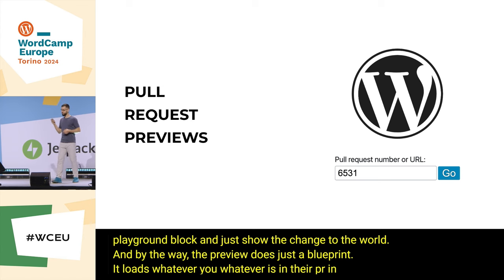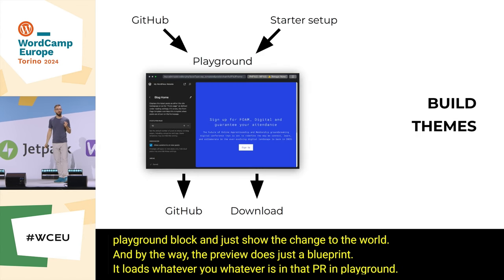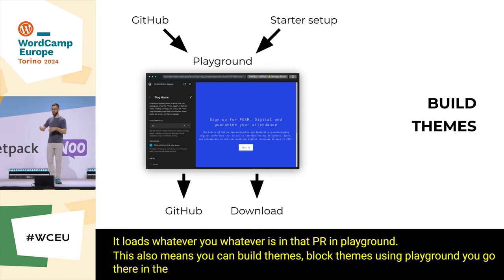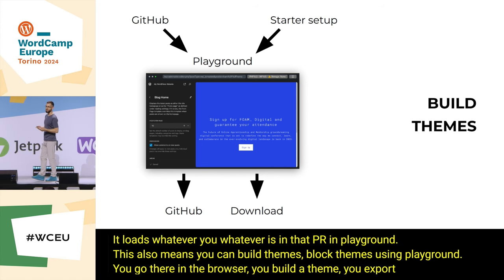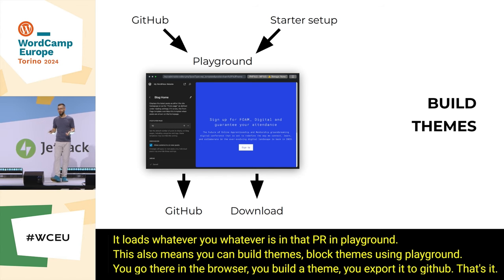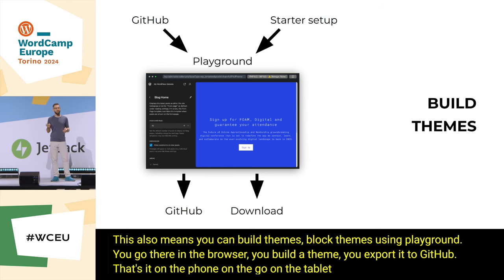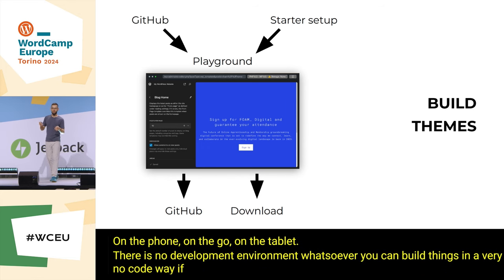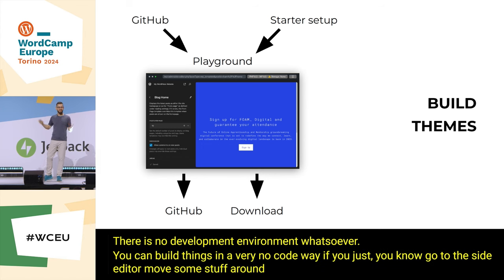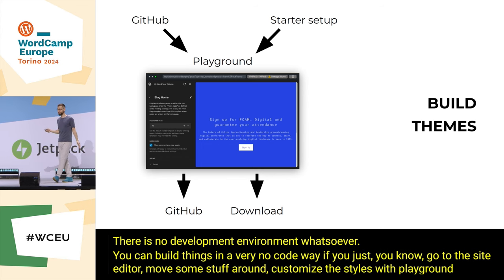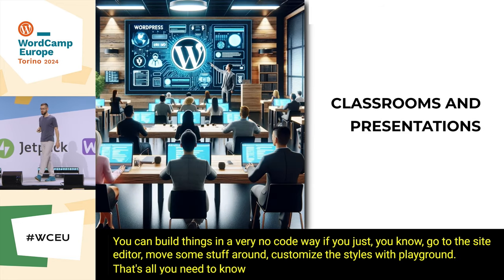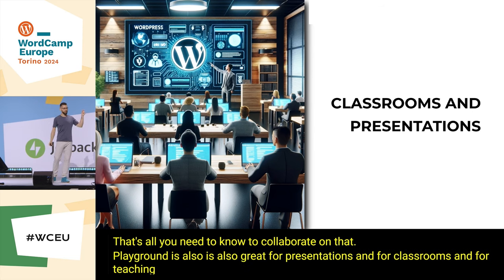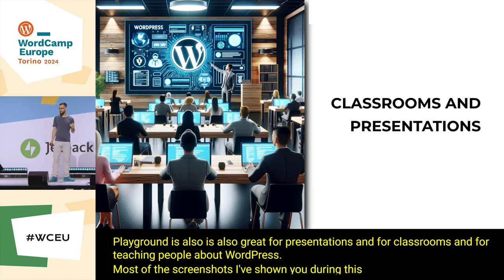That preview is just a blueprint — it loads whatever is in that PR into playground. You can also build block themes using playground: go to the browser, build a theme, export it to GitHub, on your phone, on the go, on a tablet. No development environment needed — you can build in a no-code way using the site editor or style customizations. Playground is also great for presentations, classrooms, and teaching people about WordPress. Most of the screenshots shown in this talk were taken in playground.